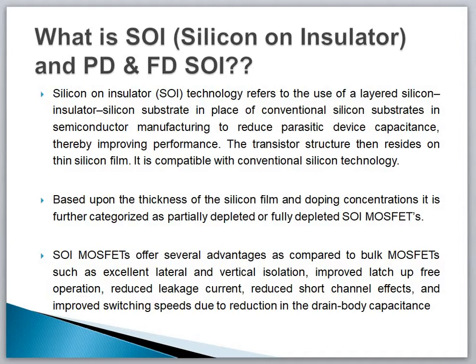Earlier we used the bulk MOSFET in which we take a silicon material substrate, but in the case of SOI there is a silicon-insulator-silicon substrate. The insulator is in between two silicon substrate materials. By using this insulator between two silicon materials, it improves the device performance and reduces the parasitic capacitance present in the device. It is compatible with conventional silicon technology.